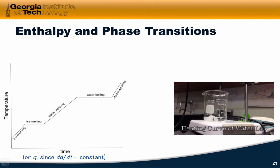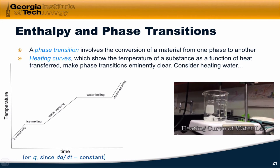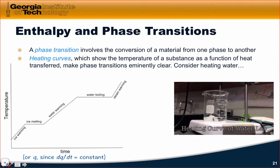A phase transition is a transition of a substance such as water from one phase to another. Heating curves show the temperature of a substance as a function of the heat transferred to it, and they make phase transitions eminently clear. Think about what happens when we heat water, starting below its freezing point, and warm it slowly.